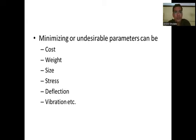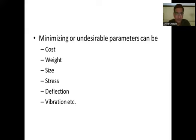For minimizing or undesirable parameters in optimum design, we concentrate on reducing avoidable parameters. The first parameter is cost. While performing the design of any component, our aim is to minimize the cost of the design or product. Cost is the first parameter that comes under the minimizing or undesirable parameters.